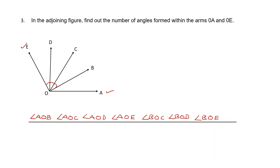Continuing with C: angle COD, angle COE. Then the last one with D: angle DOE. So we have listed all the angles formed between arms OA and OE.